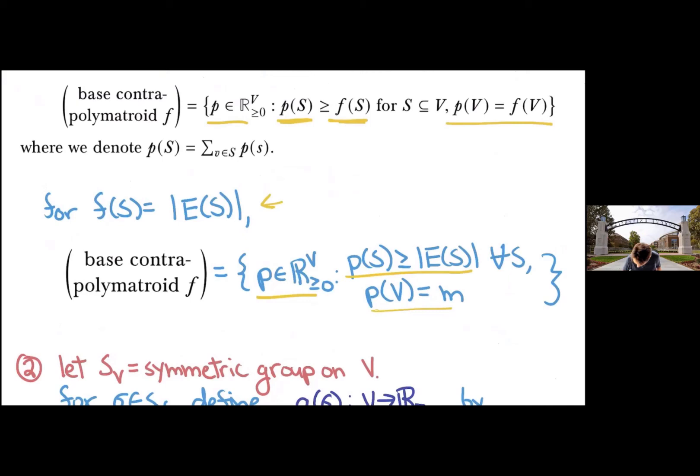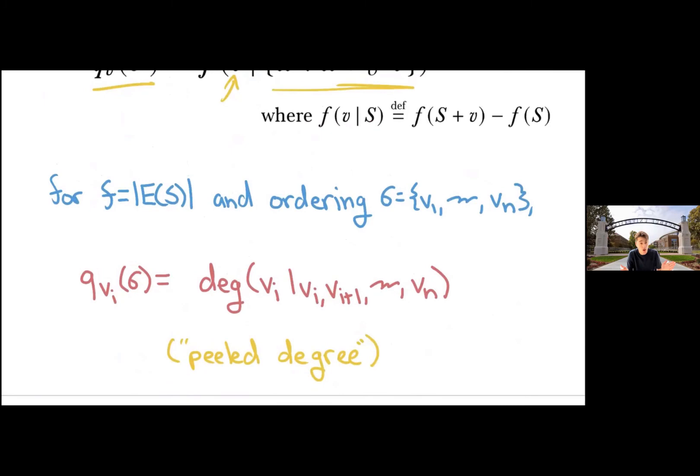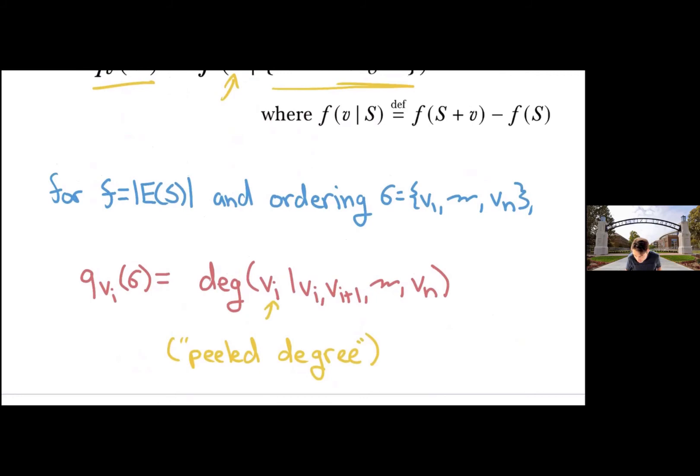The other notation I need to introduce before we get into the ideas is a mapping between orderings of the vertices and vectors, and it's really the peeled off degree. So given an ordering Sigma, I'm going to define Q of the ordering to be the marginal value gained from adding V to the set of vertices that are ordered after. So in the particular case of our densest subgraph problem, given some ordering V1 through VN, this is really the remaining degree of VI based on the vertices that are left. So it's the same as that degree when things get peeled off, if we interpret Sigma as some ordering for the peeling process.